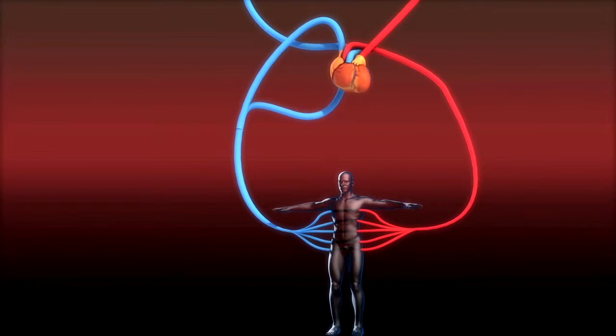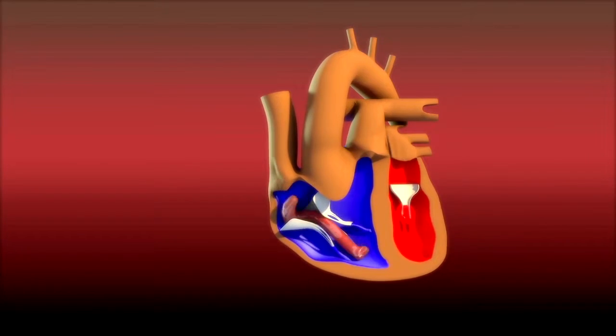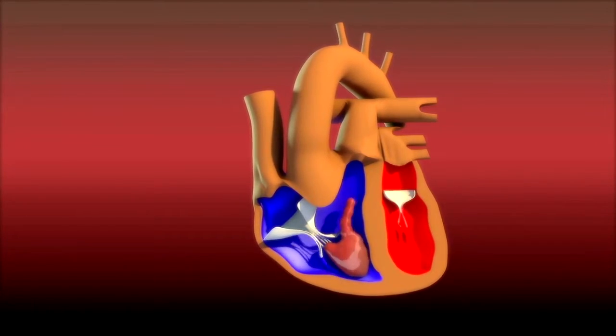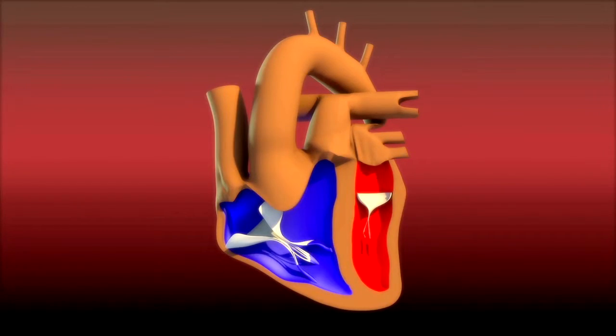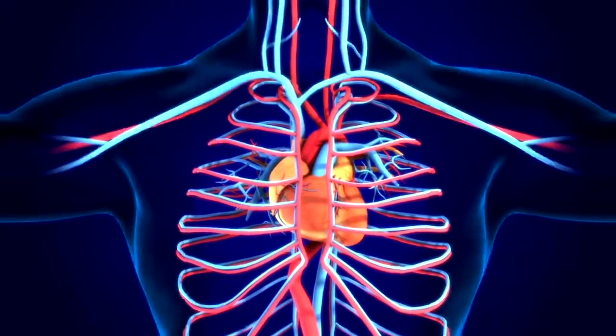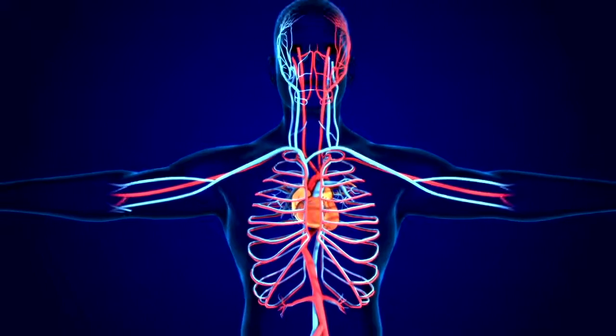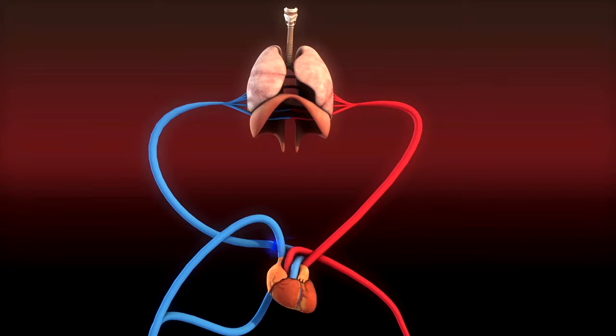The pulmonary circulation is a process starting from the right ventricle. Oxygen-poor blood is pumped into the pulmonary artery, which branches off into smaller arteries and capillaries. The capillaries form a thin network around the pulmonary vesicles, where carbon dioxide is released from the blood and fresh oxygen enters the bloodstream.